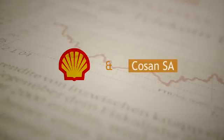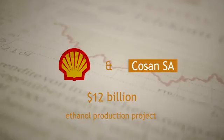One such project which would have been appraised is the $12 billion joint venture with Cosan SA for the ethanol production project.